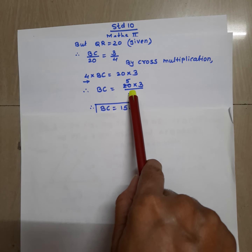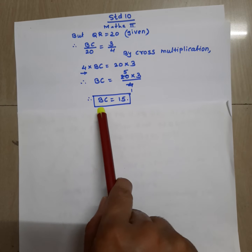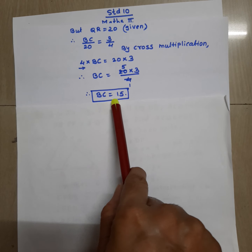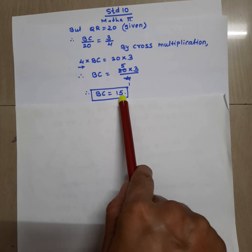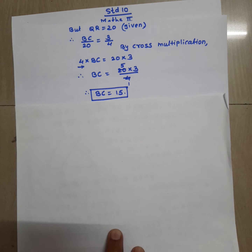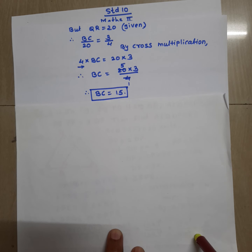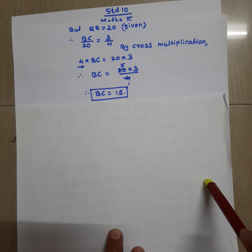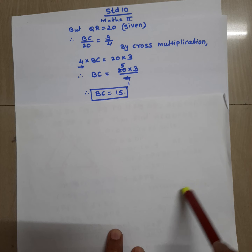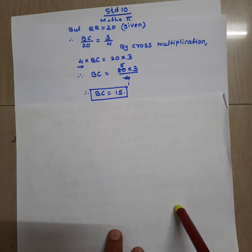Transferring 4 to the right side, BC is equal to 20 × 3 upon 4. Simplifying, BC is equal to 15 units. Thus, if the areas are given or an equation in the form of areas is given, you can find any side of either triangle.